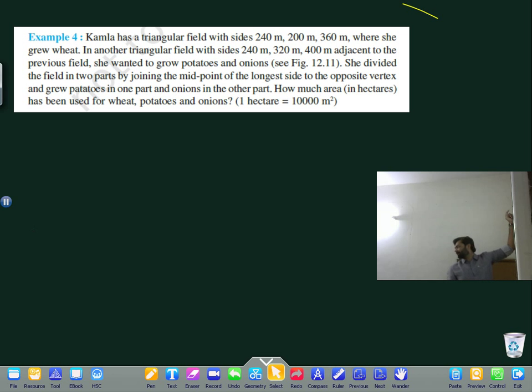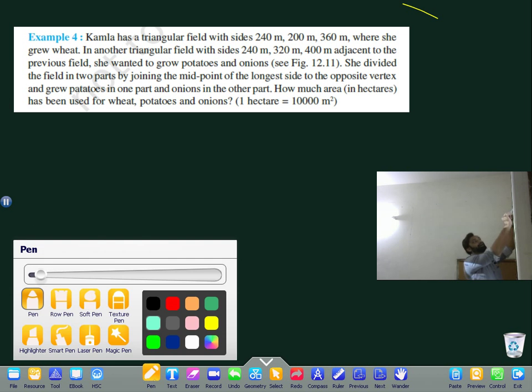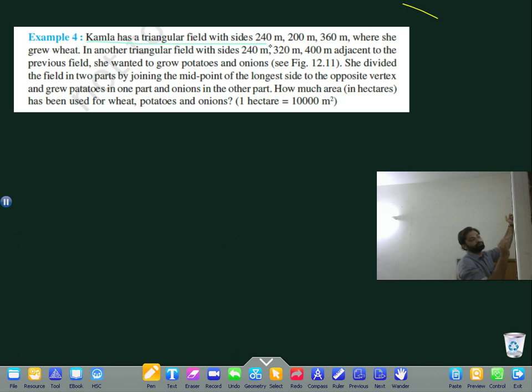Okay students, so today we will continue with some more examples on Heron's formula. Example number 4: Kamala has a triangular field. So draw the triangular field first of all.